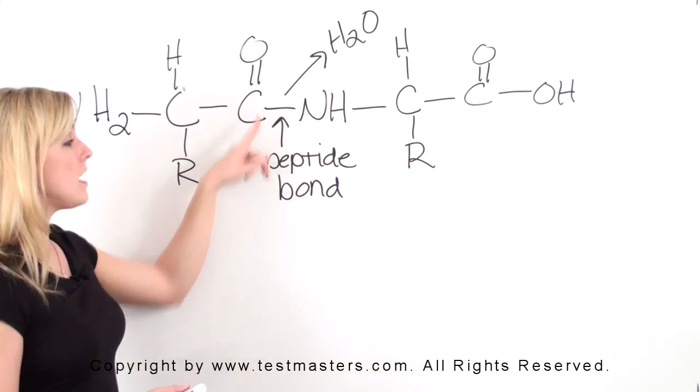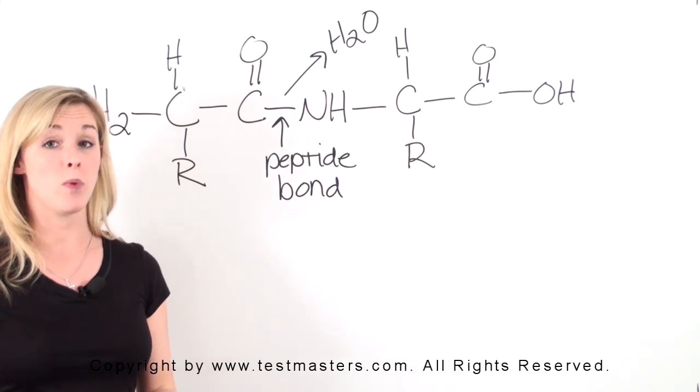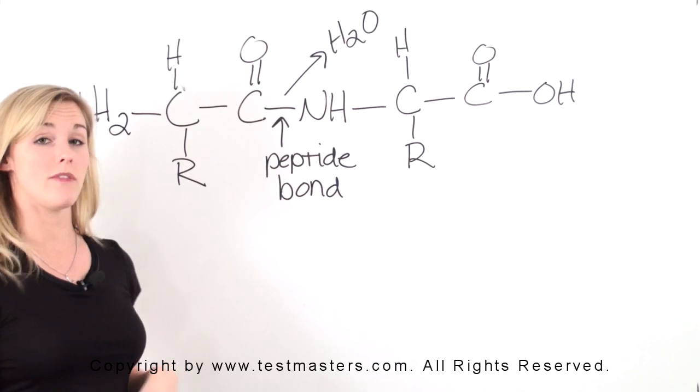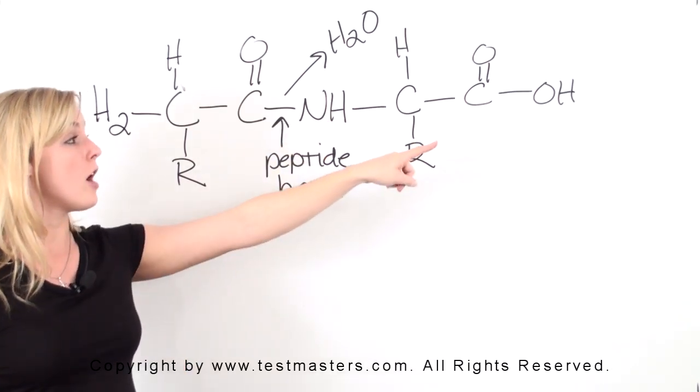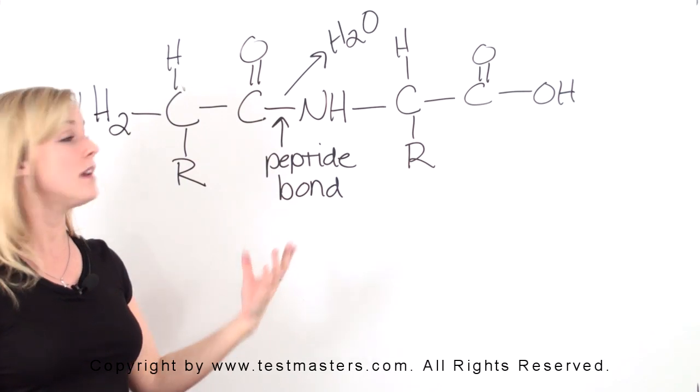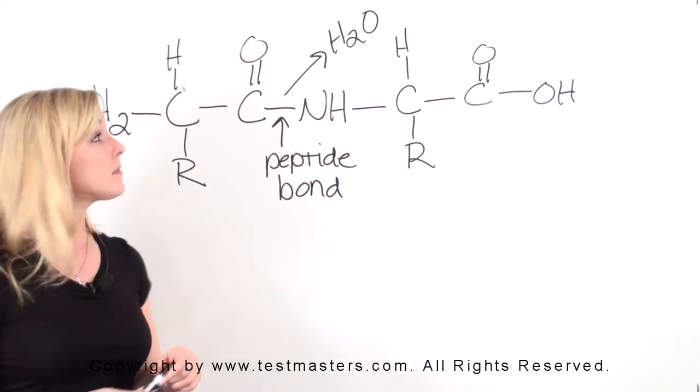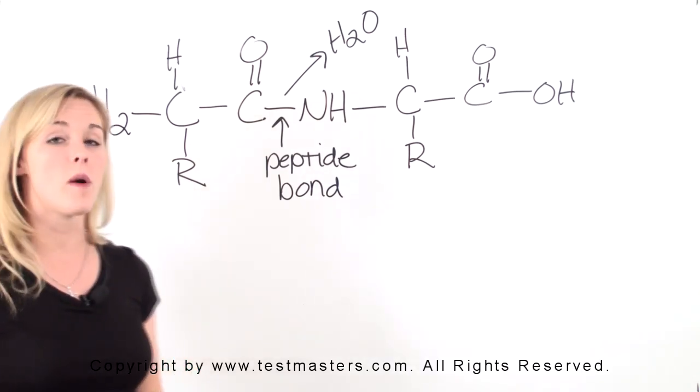This bond right here is your peptide bond. That's going to be our linkages between our different amino acids. Now as you can see here, we have expulsion of our water group. In order for this bond to form, we needed to lose that OH group that would have occurred at the end, and we also lose one of the H's off of our N group. So we're getting rid of a water molecule in order to form a peptide bond.